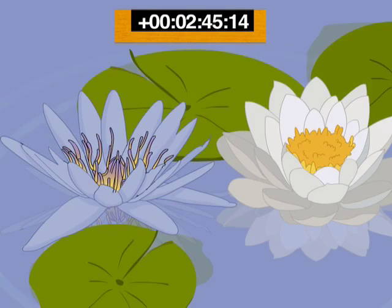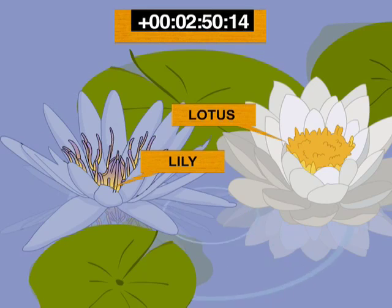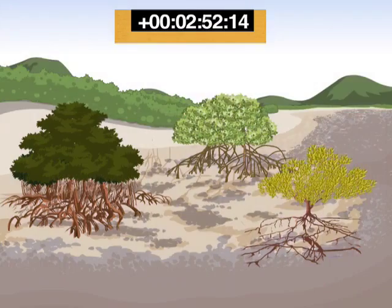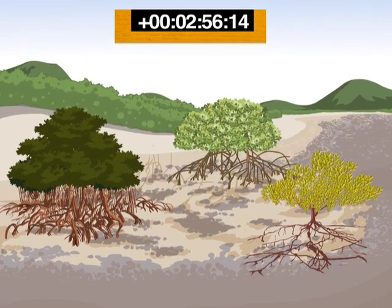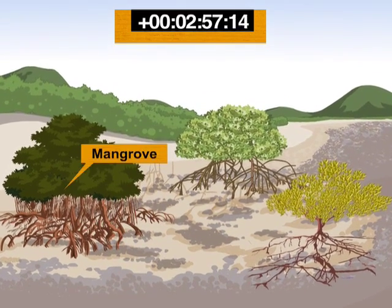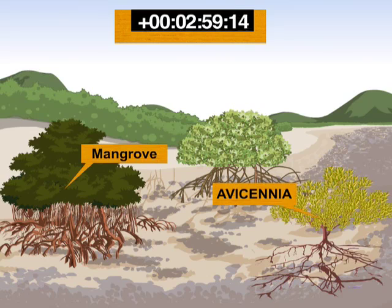Hydrophytes are plants living in water. Examples: Lotus and Water Lily. Halophytes are plants growing in marshy areas. Examples: Mangrove trees, Avicynia, and Rhizophora.